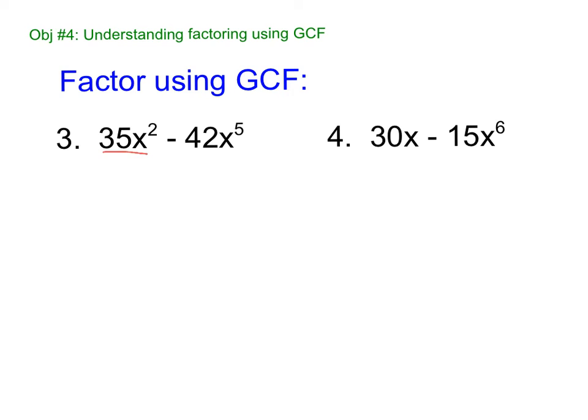So I'm going to separate these. I think it can be easier. So it's going to be 7, alright, 35 and 42 is 7. x, and then what's smaller, 2 or 5? The 2.